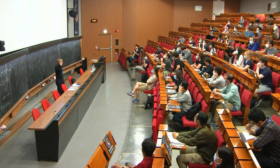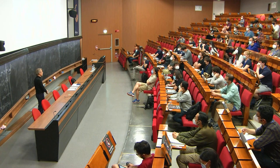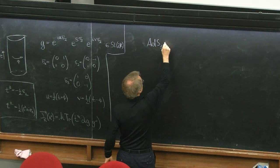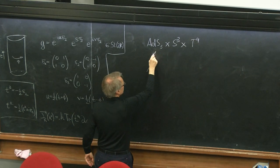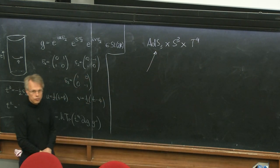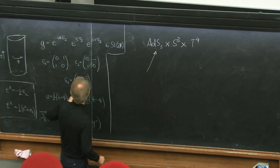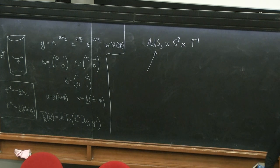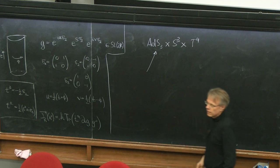Let me remind you where we got to last time. We are describing the strings on ADS3 cross S3 cross T4. So far, we have been trying to understand how you describe strings on ADS3, concentrating on bosonic strings. The idea is that ADS3 is geometrically a group manifold corresponding to SL2R, except we have to be careful about the periodicity in T, which we will have to undo. ADS3 is really the universal covering group of SL2R.